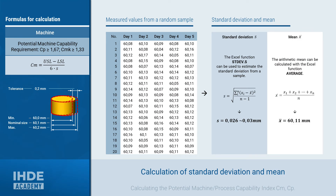In addition to the lower and upper specification limits, which can be taken from a production drawing, we also need the standard deviation of all measured values. The standard deviation of a sample can be calculated with MS Excel using the STDEV.S function. The value for S is 0.026 mm, or rounded up to 0.03. Since we will also need the arithmetic mean to calculate the capabilities, we calculate it here at the same time: X-bar has a value of 60.11 mm.